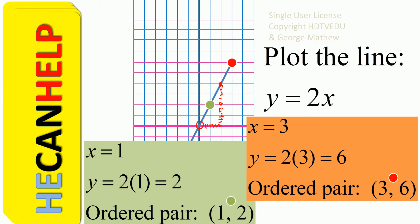Our first ordered pair is x is equal to 1, y is equal to 2 — that is our green dot. The other point is x is equal to 3, y is equal to 6, and our ordered pair is (3, 6) — that is the red dot. Join the green dot (1, 2) and the red dot (3, 6), and we see that the line does pass through (0, 0) and (2, 4).